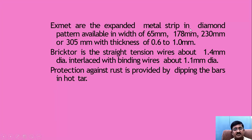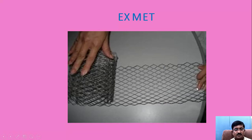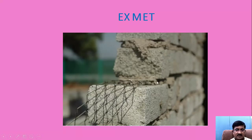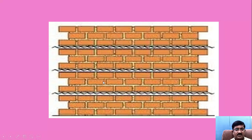X-Mate are expanded metal strips in a diamond pattern, available with widths of 65 mm, 178 mm, 230 mm, or 305 mm, and thickness of 0.6 to 1 mm. Brickter consists of straight tension wires of about 1.4 mm diameter interlaced with binding wires of about 1.1 mm diameter. Protection against rust is provided by dipping the bars into hot tar. The various types of patterns are available in X-Mate. The gaps between the X-Mate are filled with mortar, and because of the anchorage the wall has good compressive strength and durability. X-Mate is used at every third layer, placed in the joint.